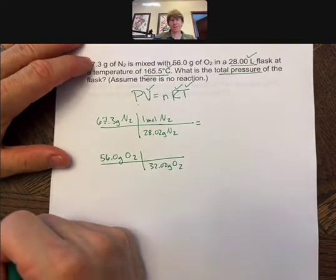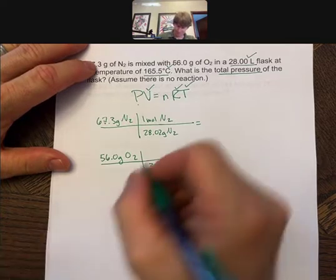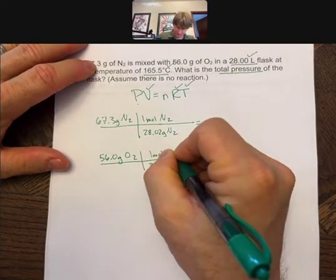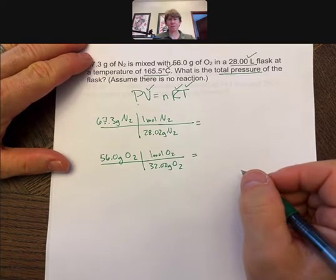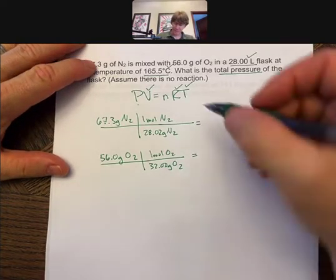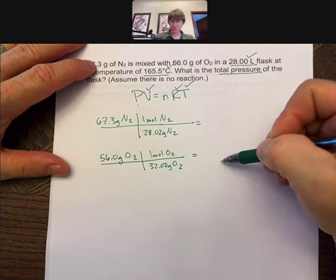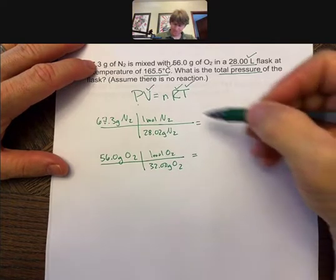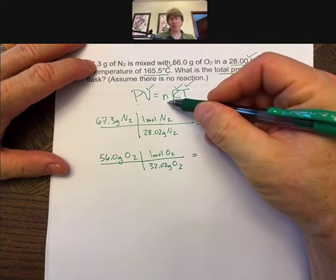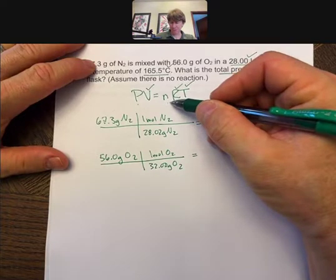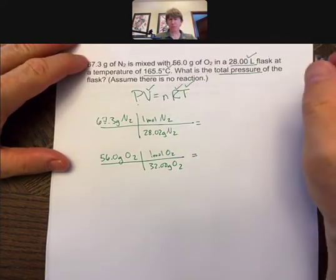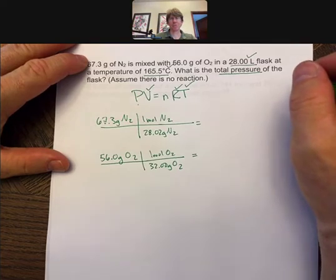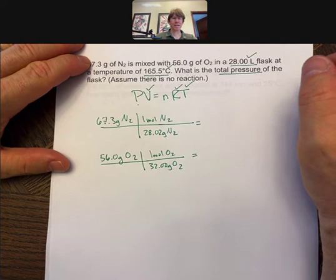We know the molar mass is 2 times 16 for oxygen, and what we can do, and I'm going to leave you here, is we can find these two moles, add them up, put them in as the moles in our ideal gas law, plug everything else in with the temperature conversion, and you'll be able to find the total pressure for this problem.